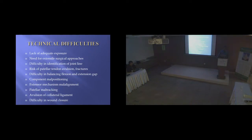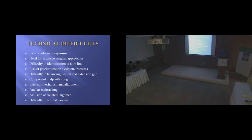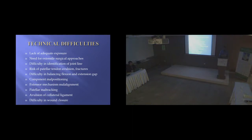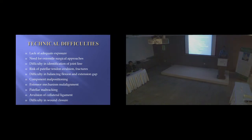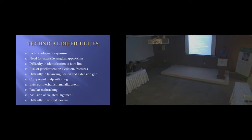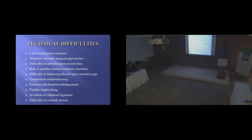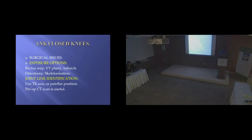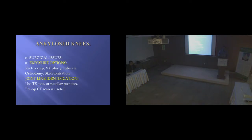When you look at the challenges, there are several: lack of exposure — it's a difficult exposure. You need to think of extensile approaches, difficulty in identifying joint lines, risk of ligament or soft tissue avulsion, balancing the flexion-extension gap, component malpositioning, aligning the extensor mechanism, patellar tracking, avulsion of the collateral ligaments, and difficulties in wound closure. In one word, everything about an ankylosed knee is difficult.